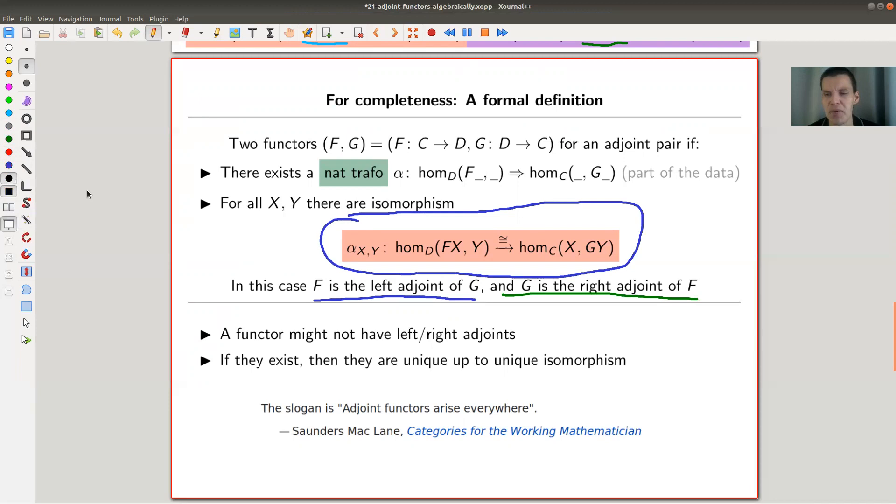Just be a little bit careful, this happens in D and this happens in C. So F of X is an object in D, Y is an object in D, G of Y then goes in the opposite direction, X is an object in C. That's what it is.